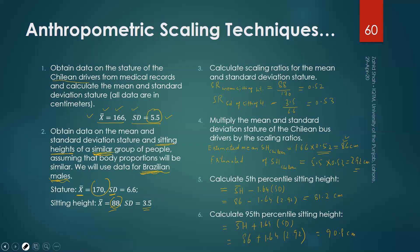To recap: we needed the mean stature and standard deviation of stature for the target population and the known population, plus the mean and standard deviation of the variable of interest from the known population. We then found the scaling ratios using the known population's data and multiplied them by the target population's stature values to find the mean and standard deviation of the variable of interest.